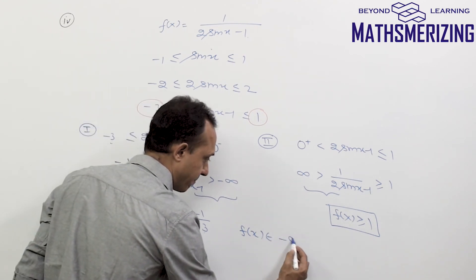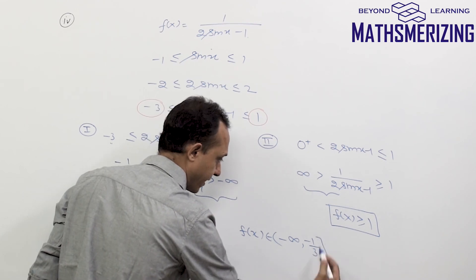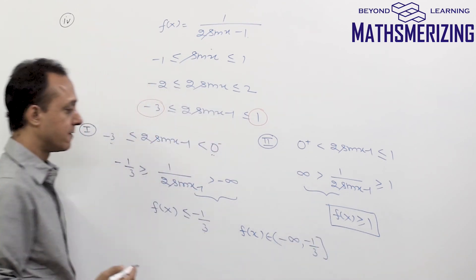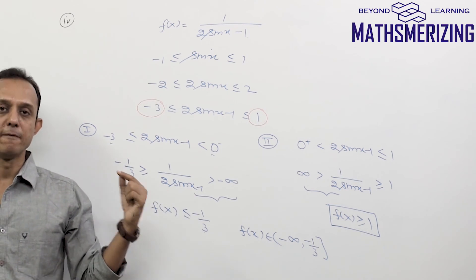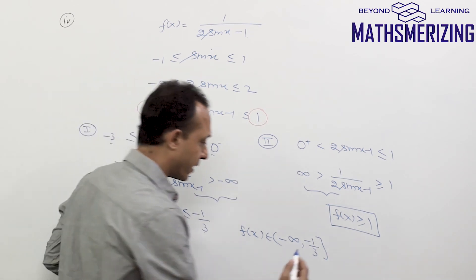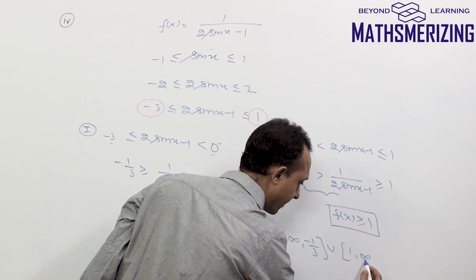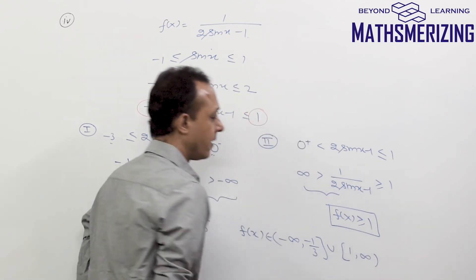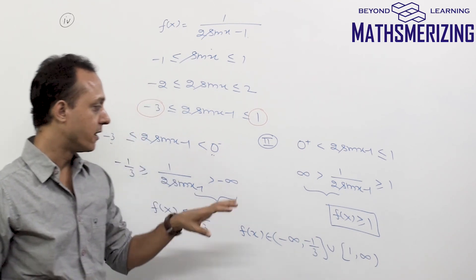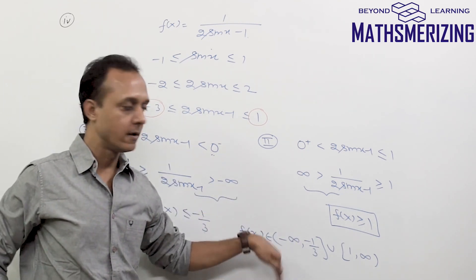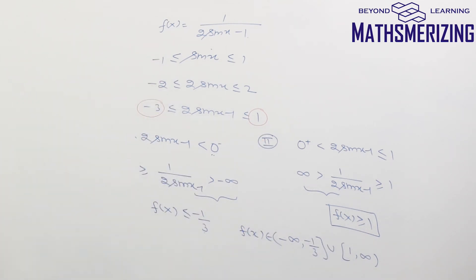So the range of this function is: f(x) is either less than or equal to -1/3, written as (-∞, -1/3], union [1, +∞). Negative infinity is not included, -1/3 is included, 1 is included, and positive infinity is not included. The value of this function is either less than -1/3 or greater than or equal to 1.